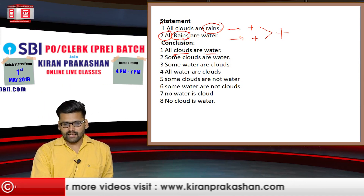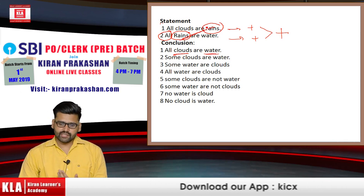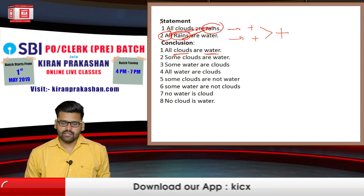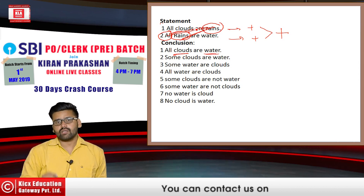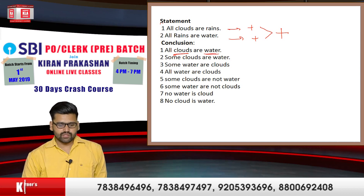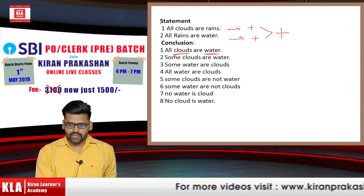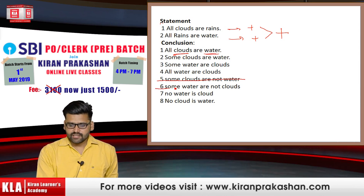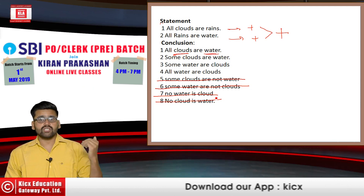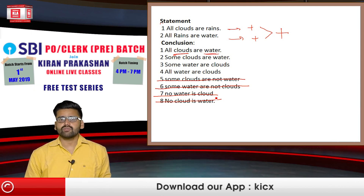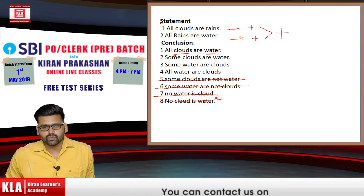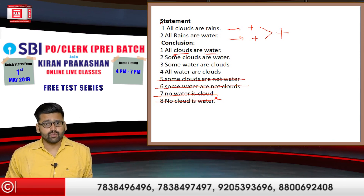When statements are positive, the conclusions will only be positive. Remember, syllogism is an imaginary chapter — it has nothing to do with real-world facts. The options for the question are: only first follows, only second follows, either one or two follows, neither one nor two follows, none follows, or both follows.